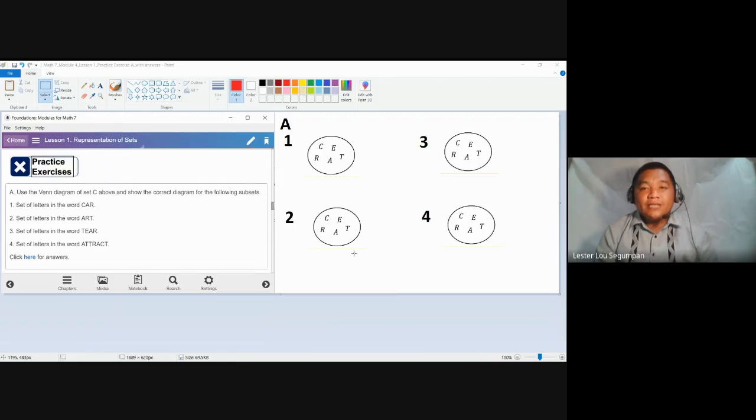Because we describe subsets as a set containing the elements of a bigger or another set. So in Venn diagram, since this is already, this one, this is already the Venn diagram for set C.